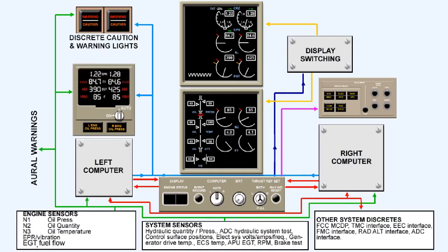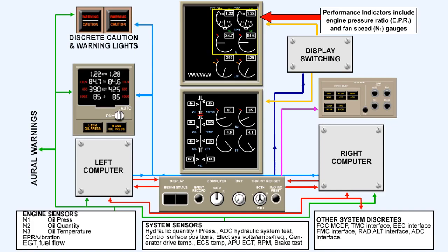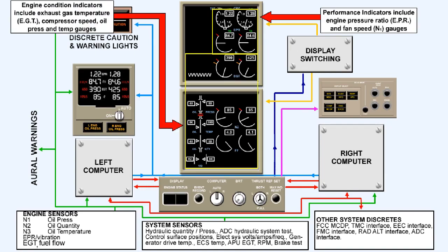The engine instruments are divided basically into two categories that are called either the performance indicators or the engine condition indicators. Performance indicators are thrust indicating instruments such as the engine pressure ratio gauge or the fan speed N1 gauge. Engine condition indicators include the exhaust gas temperature EGT gauge, compressor speed, oil pressure and oil temperature gauges. We'll be discussing these and others later in the lesson.